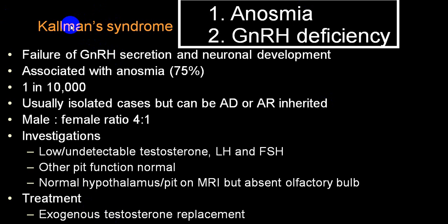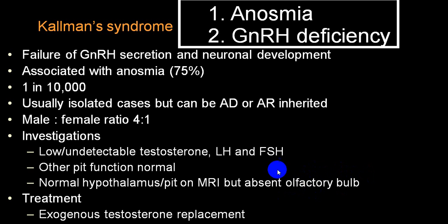Regarding genetic defects, there is Kallmann syndrome, characterized by anosmia and gonadotropin-releasing hormone deficiency. It occurs in one in ten thousand, with a male-to-female ratio of four to one. There is a very low level of testosterone, FSH, and LH, while other pituitary functions are usually normal. It can be identified by MRI showing absence of the olfactory bulb. Treatment involves giving testosterone, and gonadotropins if infertility is present.